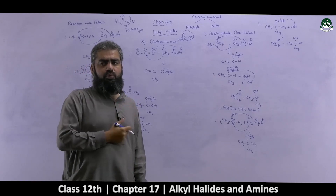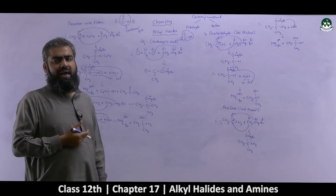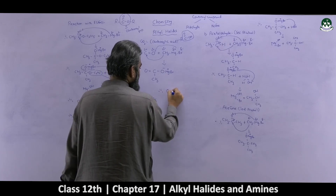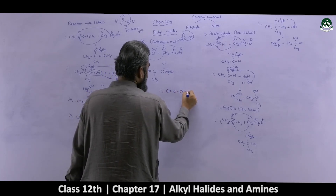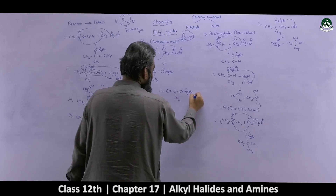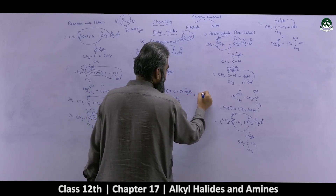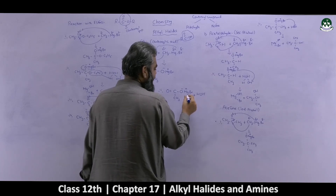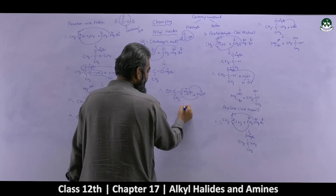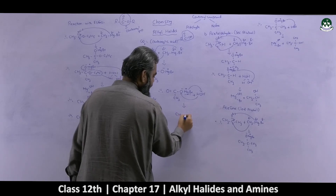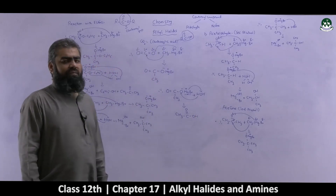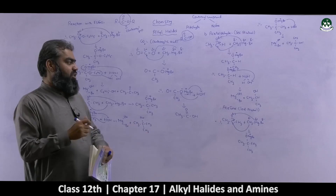In step two, this intermediate is passed through hydrolysis. The intermediate O=C(-CH₃)-O⁻-MgBr is combined with a single molecule of water. MgBr combines with OH to give the Grignard's residue, and hydrogen attaches to the negative oxygen, giving CH₃-C(=O)-OH — acetic acid — as the final product. This is how carboxylic acid is prepared using CO₂ with Grignard's reagent.